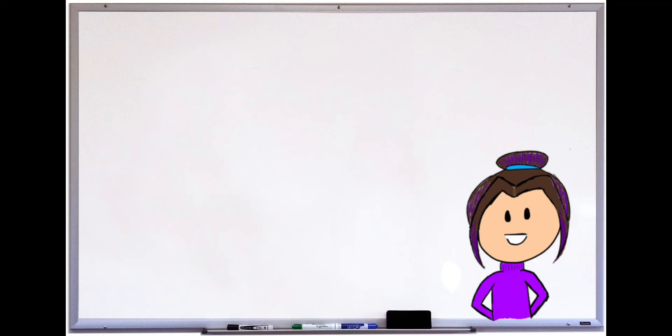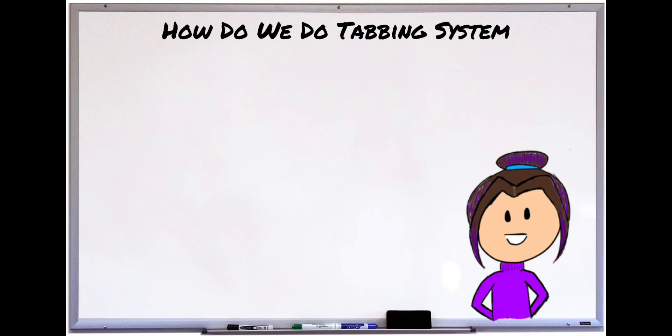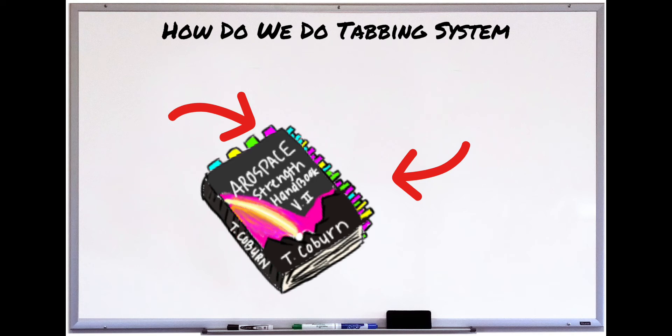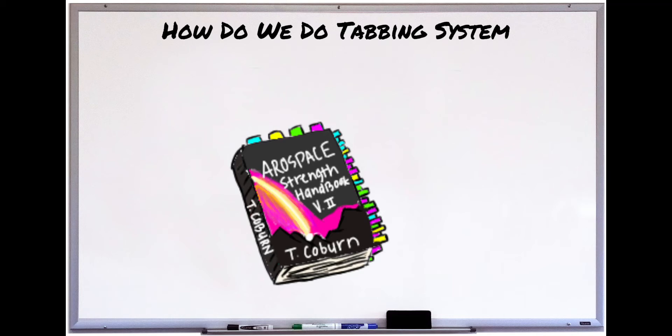All right, so now that you have your supplies, let's get down to the nitty-gritty of the whole tabbing system. If I put a picture here, hopefully you'll notice that I have two different size tabs. On the horizontal end, I have each of them labeled like test one, test two, test three, test four.